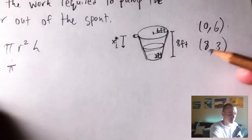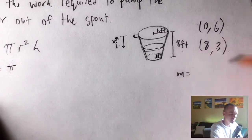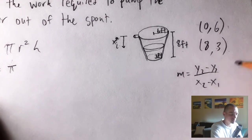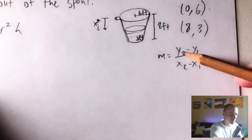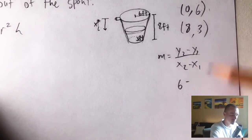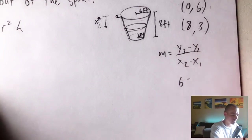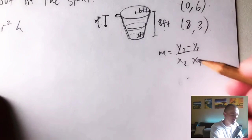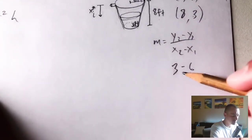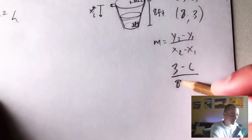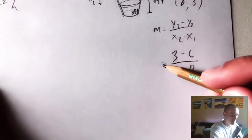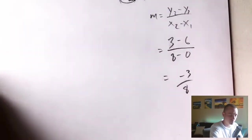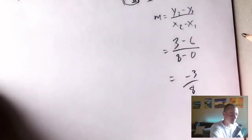First we want to figure out the slope. The slope of that linear function is going to be y2 minus y1 over x2 minus x1, which would be, our y2 is our second y value, so three minus six, x2 is going to be eight minus x1 is zero. So that'll give us three minus six is negative three over eight minus zero is eight. So negative three eighths is going to be the slope of this linear function.